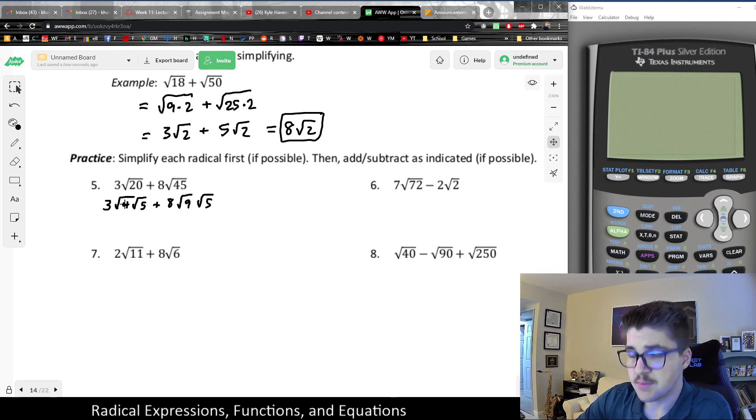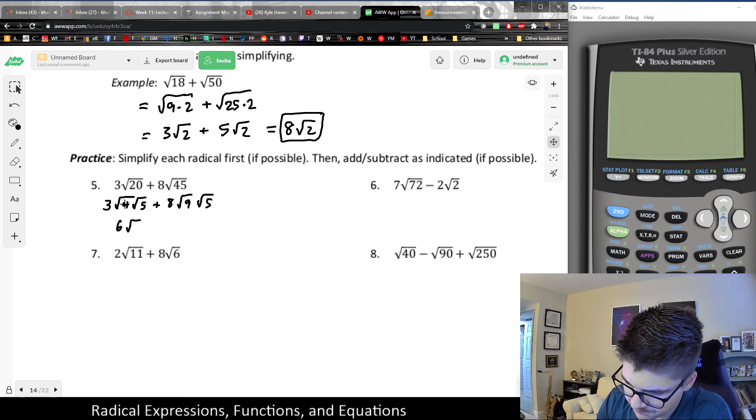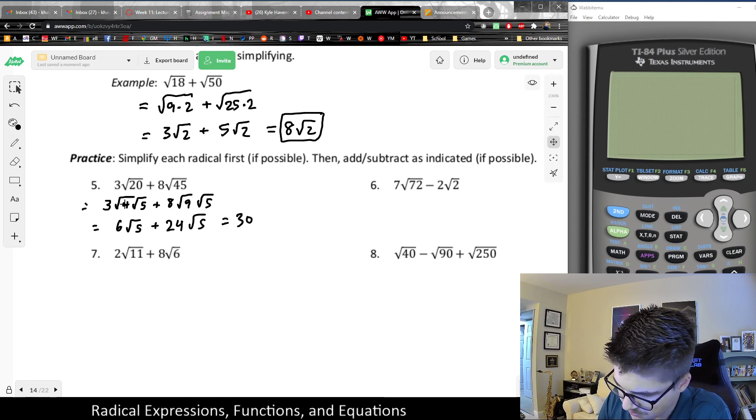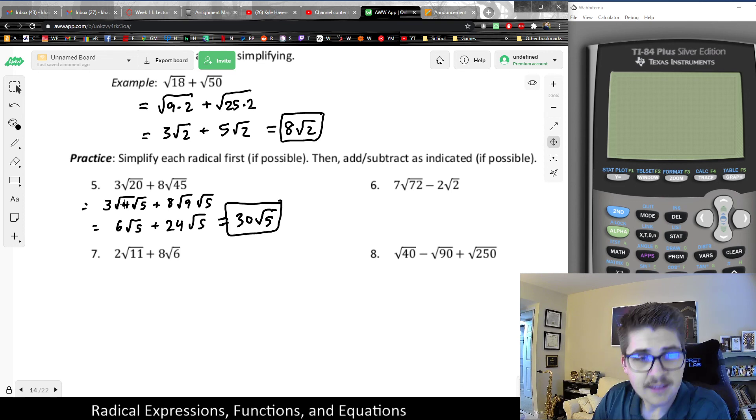And the second one is 8 times 3, which is 24 root 5. And ultimately, we would get 30 root 5 as the complete combination of those. In summary, you can only add them together if they're exactly the same radical.